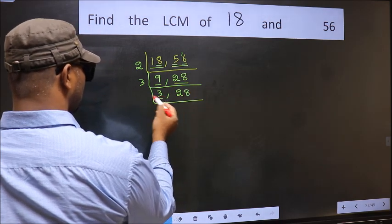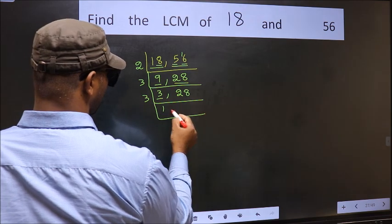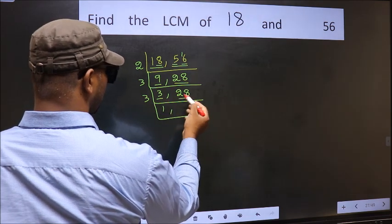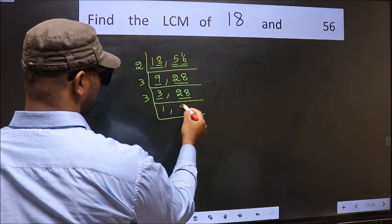Now here we have 3. 3 is a prime number, so 3 ones is 3. The other number, 28, is not divisible by 3, so we write it down as it is.